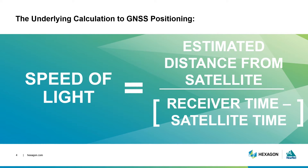The calculation assumes the speed of light, but once signals reach our atmosphere, that speed isn't completely accurate. So we call the calculated distance a pseudo range — it's our estimated range, and we have other calculations to do to increase the equation's accuracy.